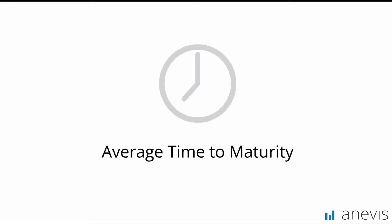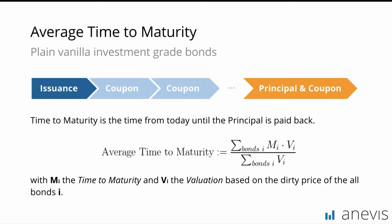The first thing we want to do is the time to maturity for bonds. This statistic is quite simple — everybody probably knows what the time to maturity actually is. It's the time until the principal is basically paid back. The average time to maturity is then calculated, as you see in this formula, by using the time to maturity of each bond, multiplying it by the actual valuation. With bonds, very importantly, you take the dirty price valuation, which means that accrued interest is also accounted for. Then you divide it by the sum of all valuations, and by this you basically get the arithmetic average time to maturity.